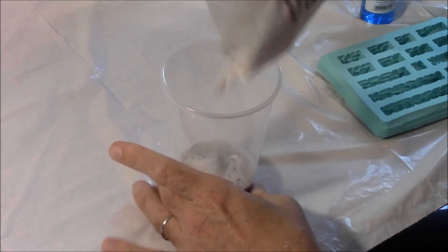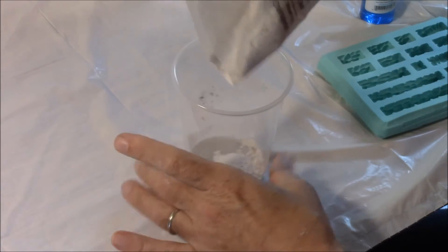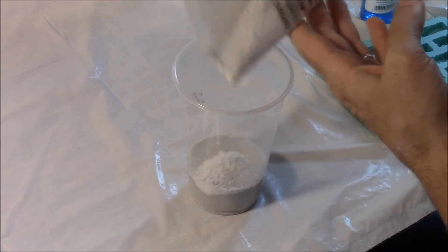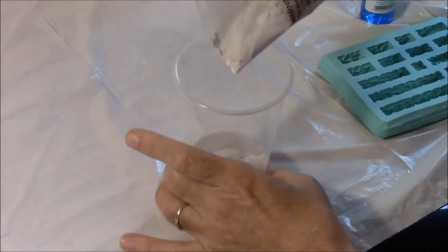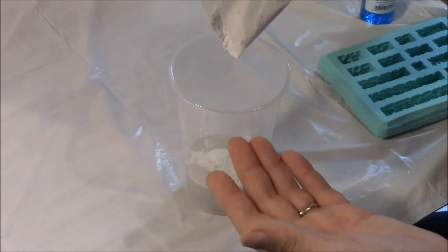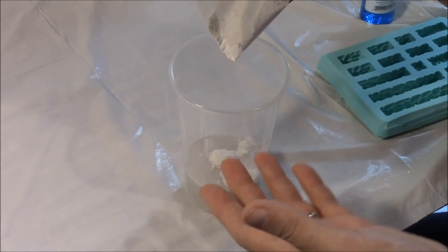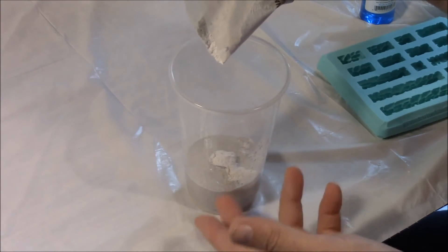What I do sometimes is I spin the cup around because you'll have one area that has got standing water, and that's the area you want to dump the plaster into. Now slowly, you'll see that the amount of time it takes for the plaster to sink down into the water takes longer. So it looks like we're starting to get close to the right amount.